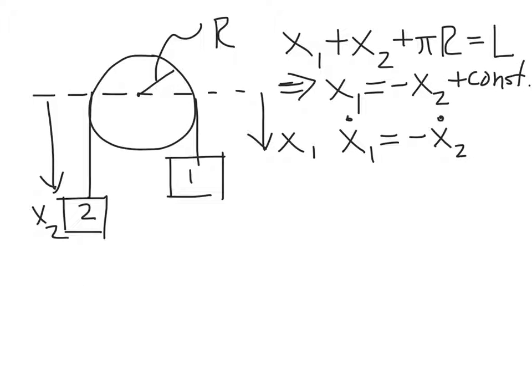So here's our Atwood machine. The pulley in the Atwood machine has a radius r. We're going to think about two different masses, mass 1 and mass 2. We're going to measure their vertical positions from the center of the pulley. The position of mass 1 will be x1, the position of mass 2 will be x2.